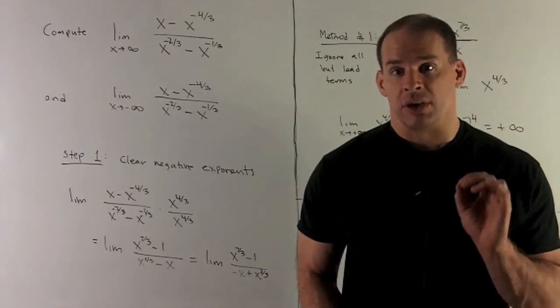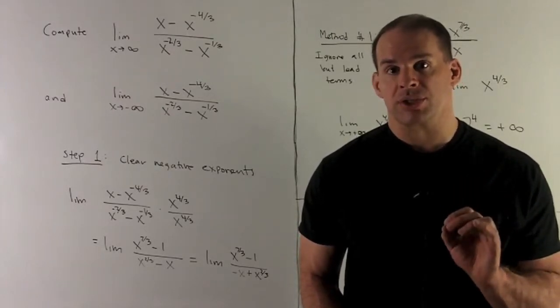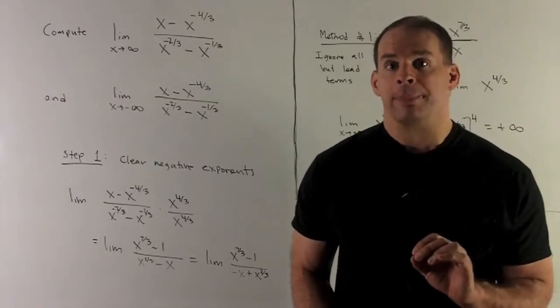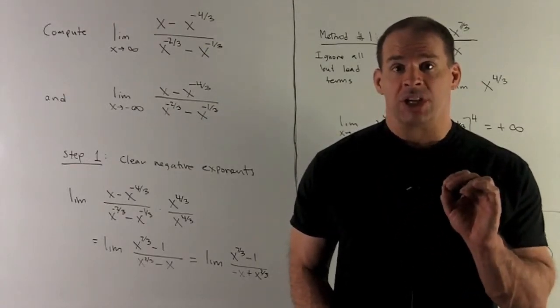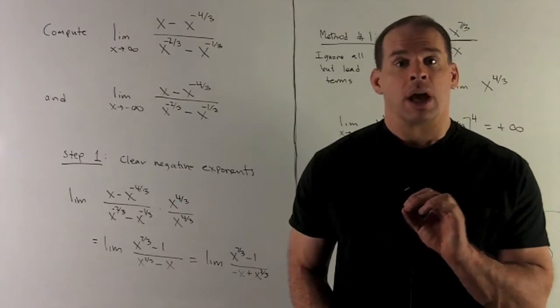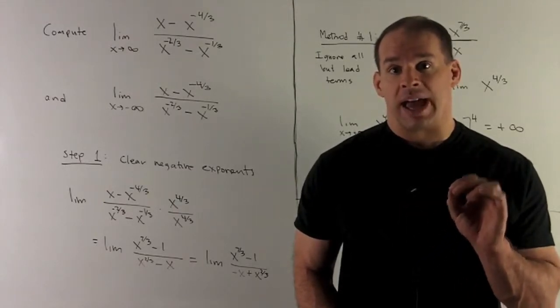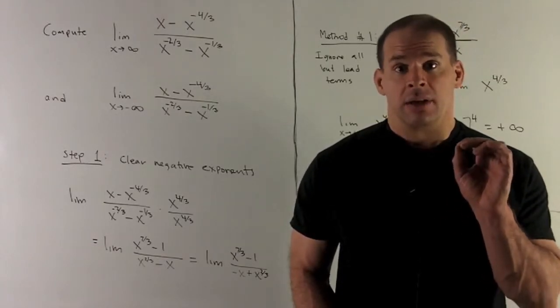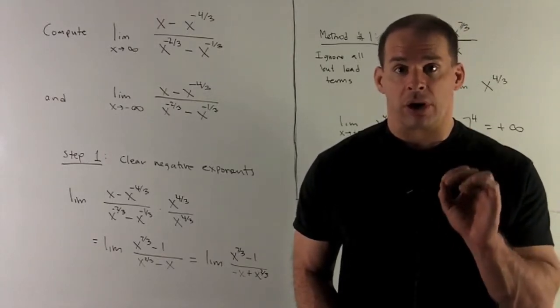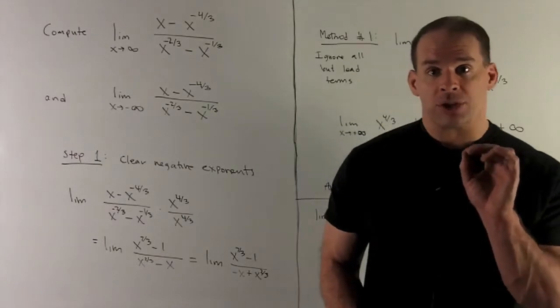My first step is to get rid of all the negative exponents. How do I do that? I look at all my terms, take a look at each negative exponent. I want the negative exponent with the largest absolute value. In this case, that's x to the minus 4 thirds. So that's what we're going to target.